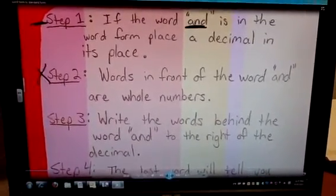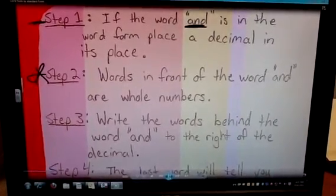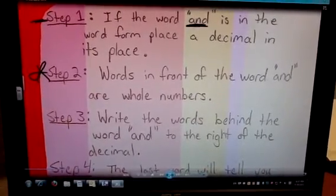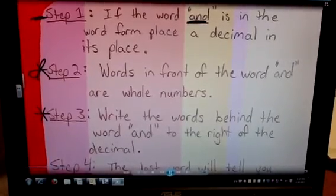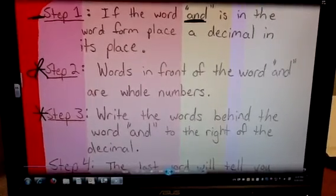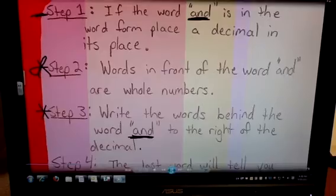Step number two says the words in front of the word AND will actually be written as the whole numbers, so they will be to the left of the decimal. Step number three: Write the words behind the word AND to the right of the decimal. So they're simply going to go to the right of the decimal place.